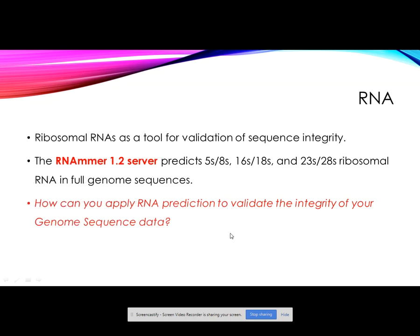One of the tools which can be applied post-sequencing is RNA-Mer. It essentially predicts the number of 5S, 8S, 16S, 18S, 23S, and 28S ribosomal RNA in full genome sequences. This is a very useful tool because if you miss out a certain number of RNA components in your genome assembly, it may be an indication of misassembly or incomplete sequencing.